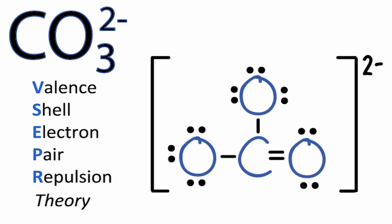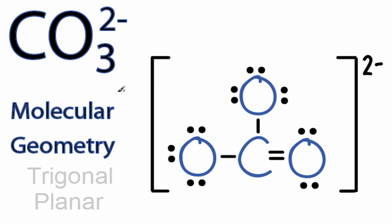According to valence shell electron pair repulsion theory, those three oxygen atoms are going to spread out as far away from each other as possible. That should give us a trigonal planar molecular geometry.